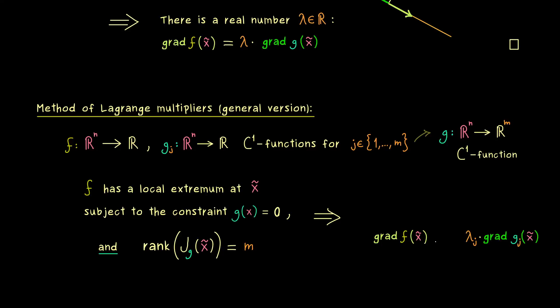And one possibility to write that down is to say that this gradient is given by a linear combination. So we have scalars λⱼ and j goes from 1 to m. Therefore in this case we find exactly m Lagrange multipliers.